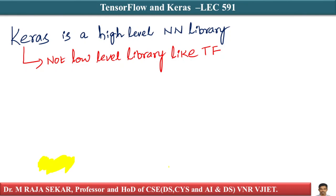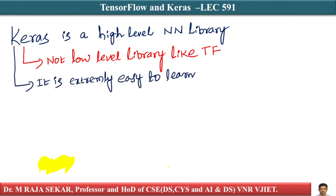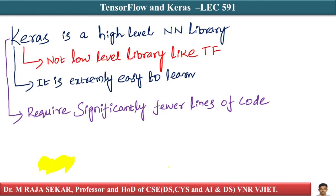You only need low-level control if you are a researcher. If you are a developer deploying solutions, you don't need to change low-level structures. For building deep learning solutions to real-world problems, a high-level neural network library is sufficient. Keras is extremely easy to learn and requires significantly fewer lines of code.